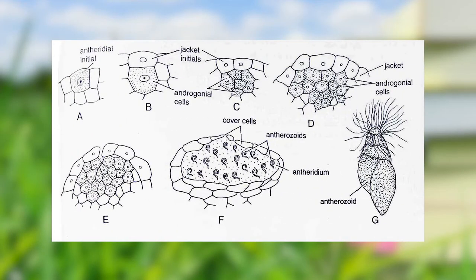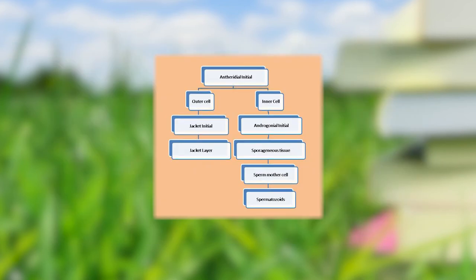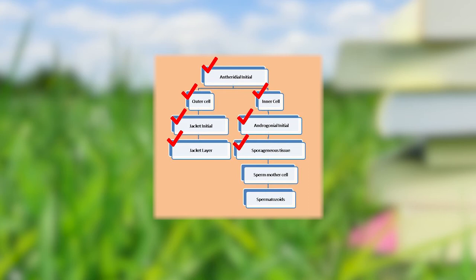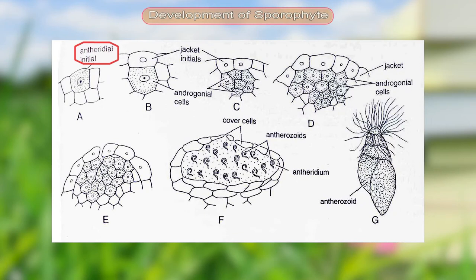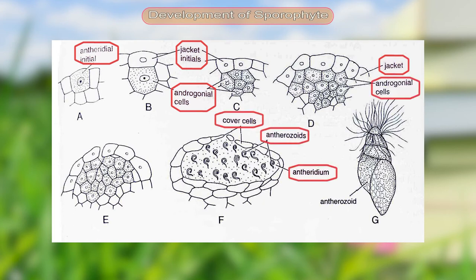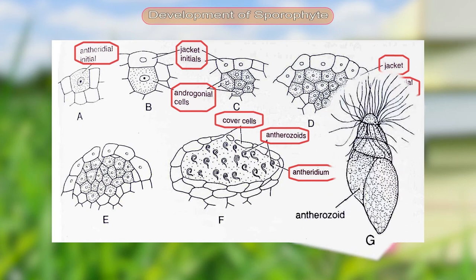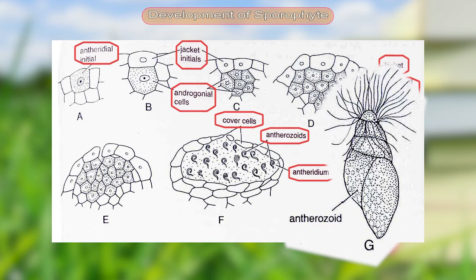For development of the antheridium, starting with the anthridial initial, there is a division into an outer cell and an inner cell. The outer cell forms the jacket initial, which further forms the jacket layer. The inner cell functions as the androgonial initial, forming the sporogenous tissue. The sporogenous tissue further forms sperm mother cells, which ultimately metamorphose into antherozoids. The antherozoids are multiflagellate, having a large number of flagella.